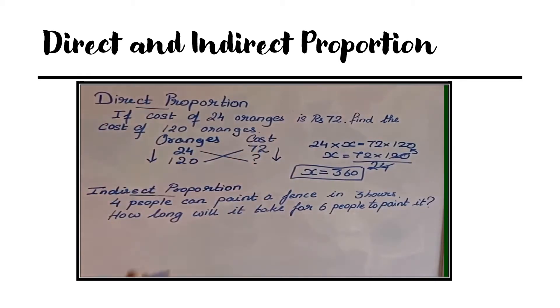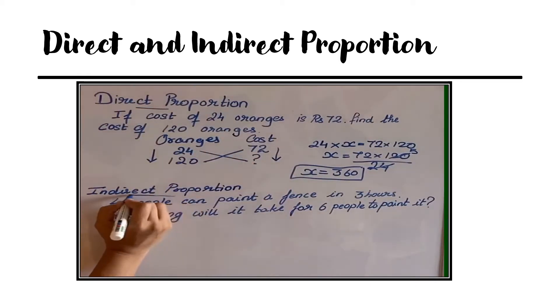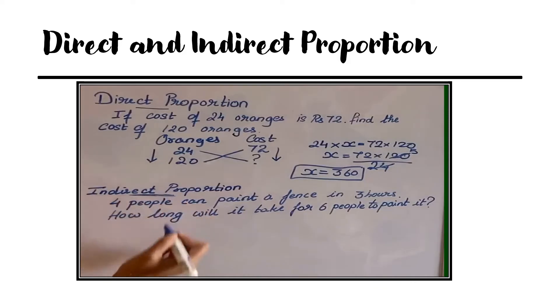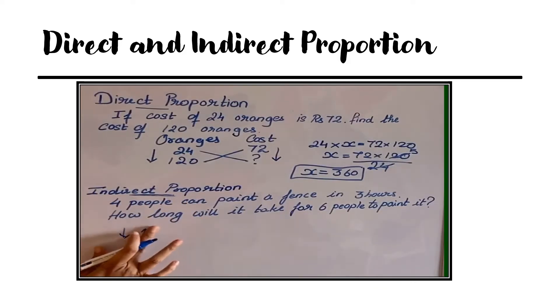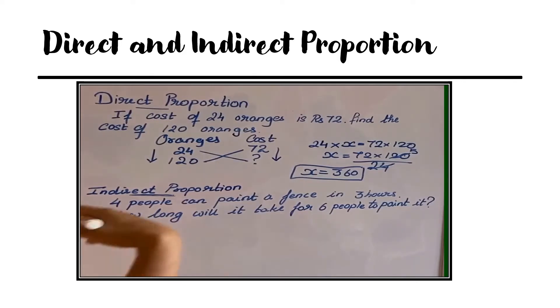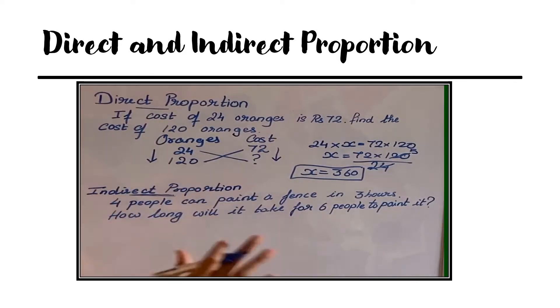Let's see what is indirect proportion. Indirect proportion means if one item increases, then the other decreases. If one decreases, the other increases. It's opposite.